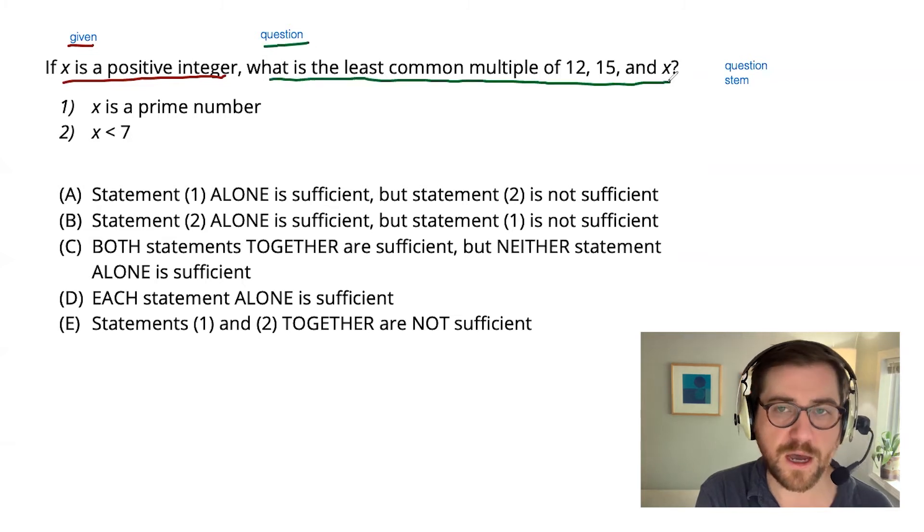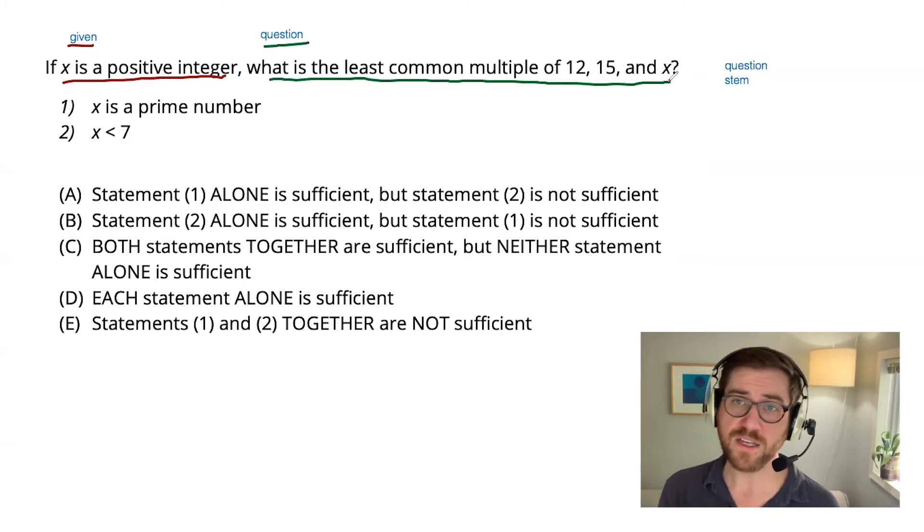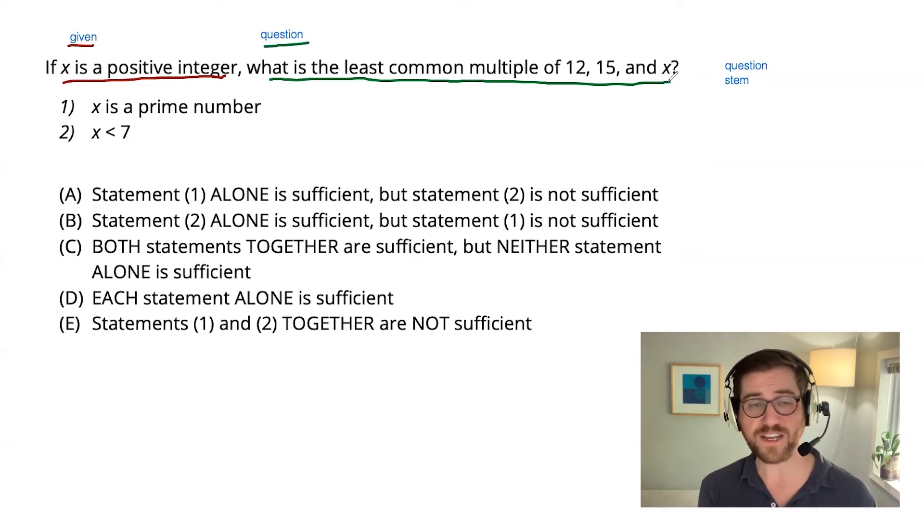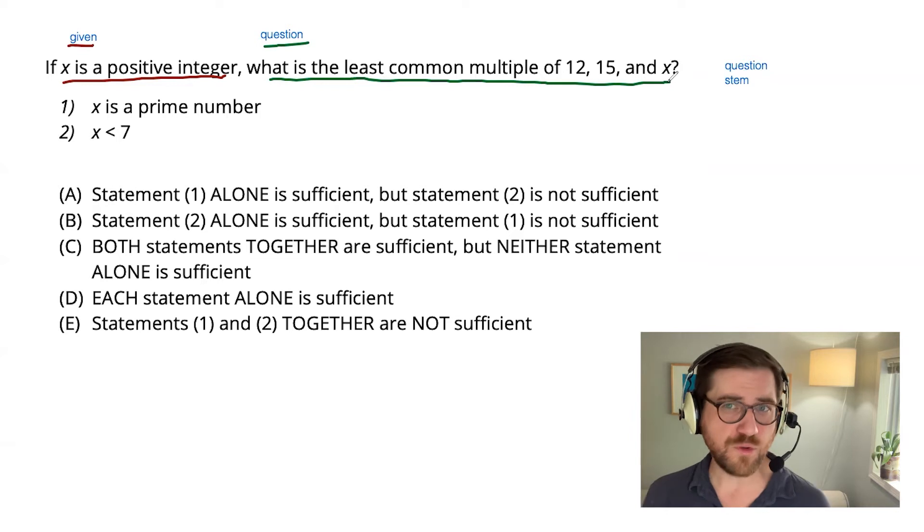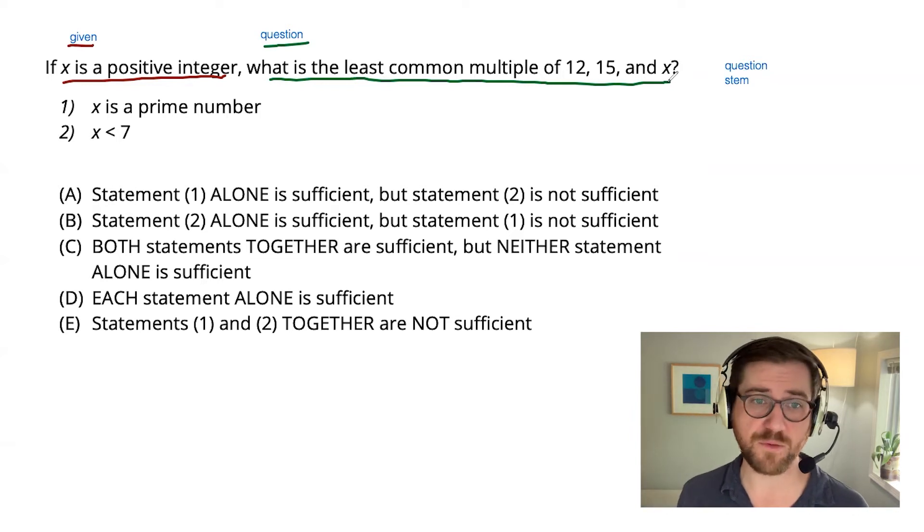Now questions in data sufficiency come in two flavors. Some questions are asking you for a yes or no response. Others, such as this one, are asking you for a specific value. If you knew the answer to this question, you would respond with a number. This number is the least common multiple.